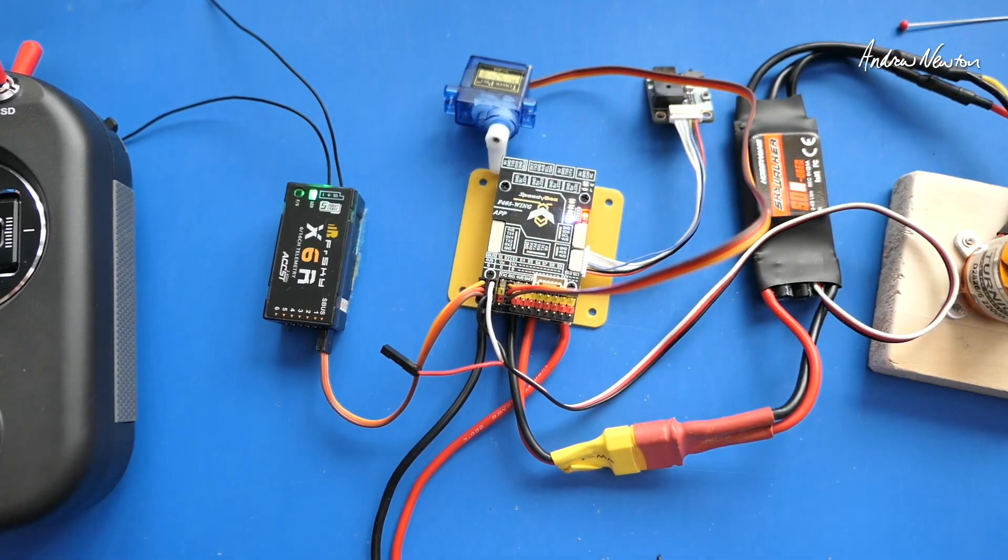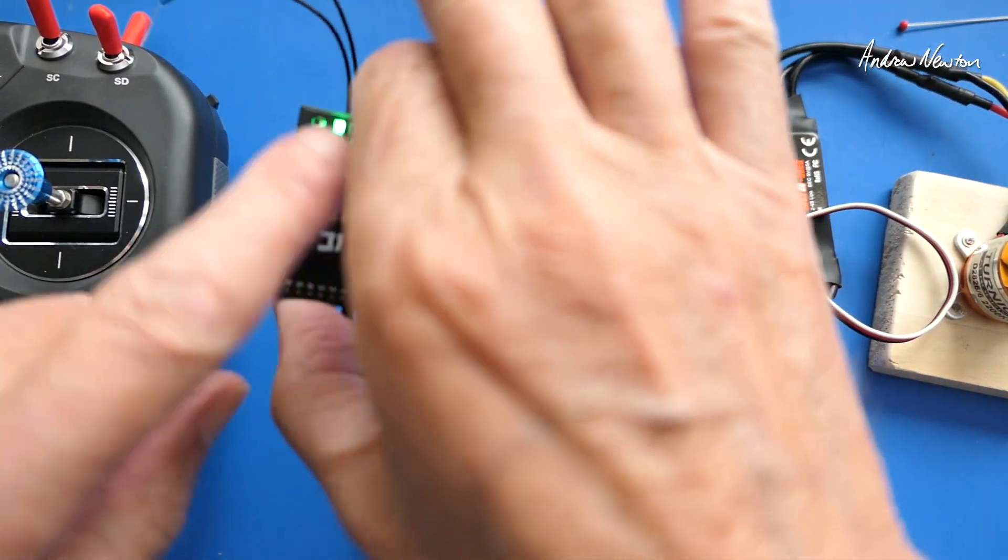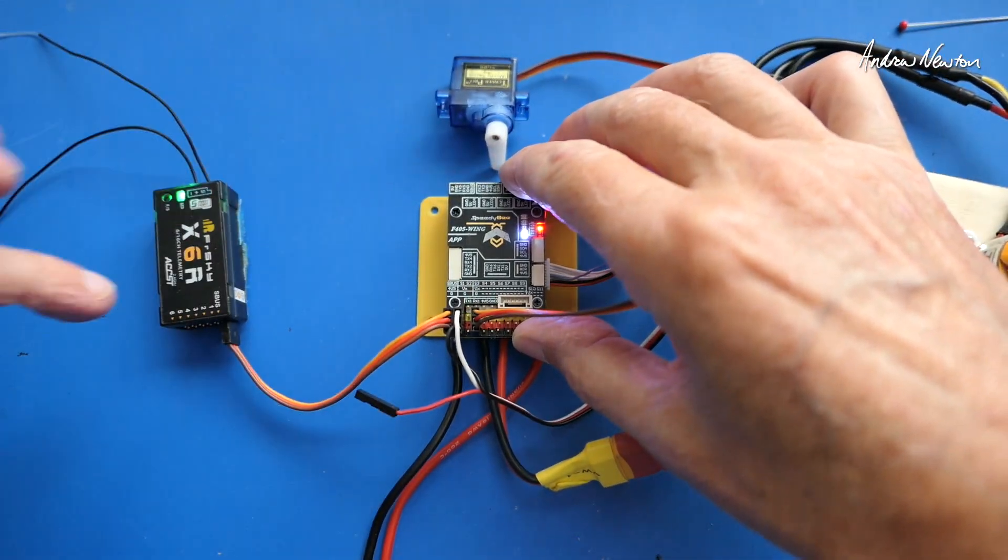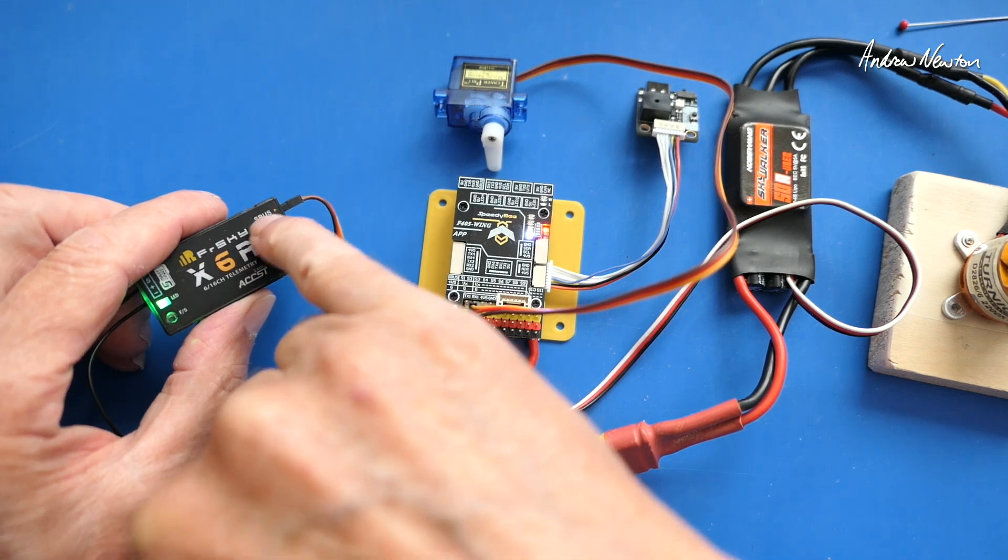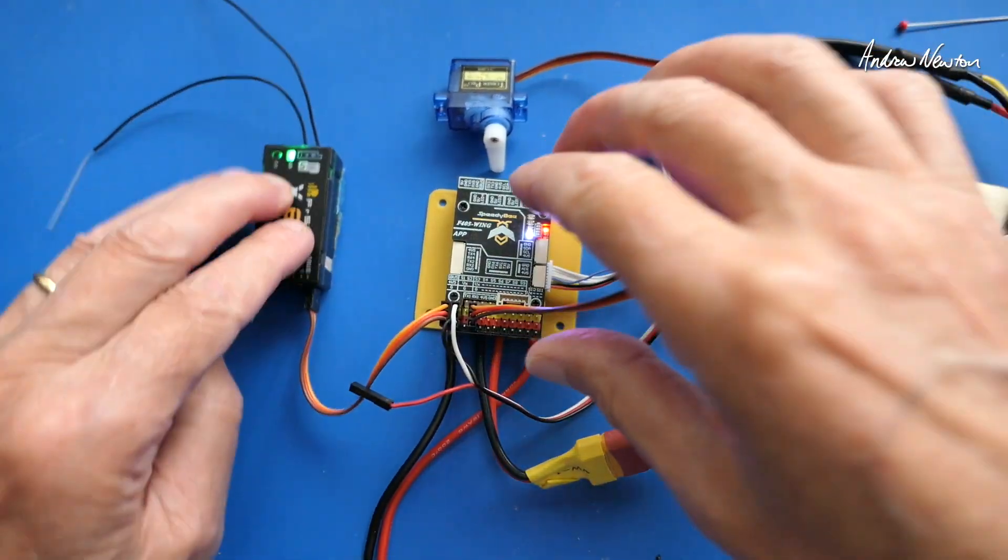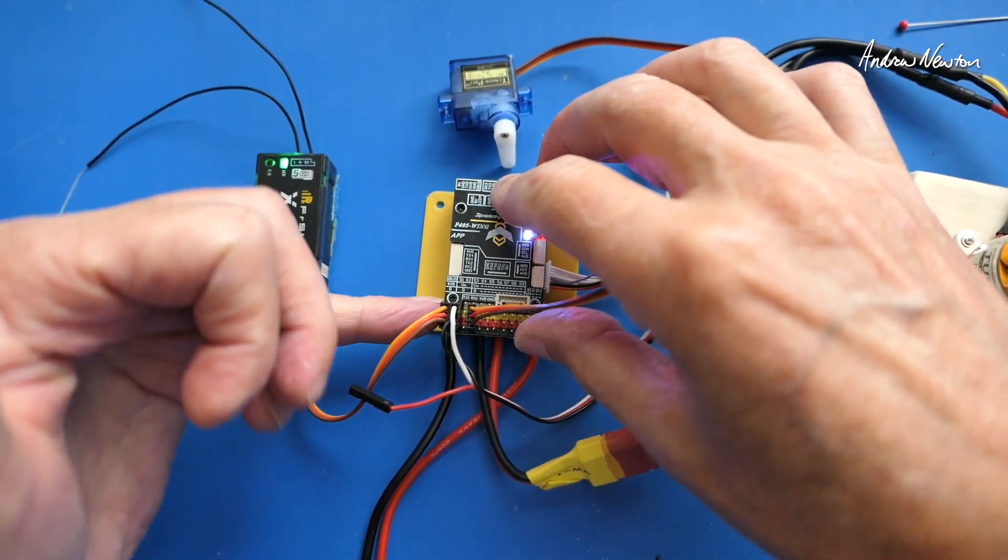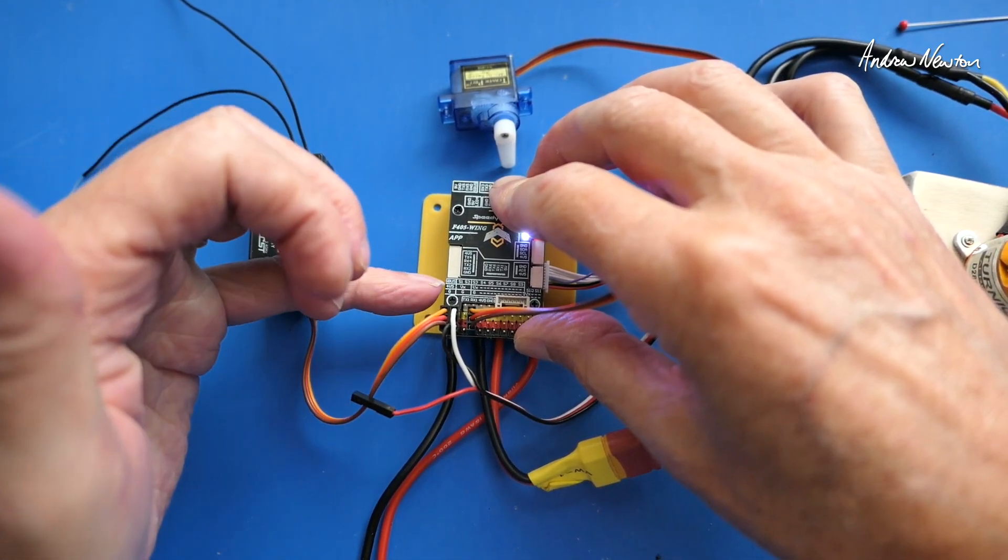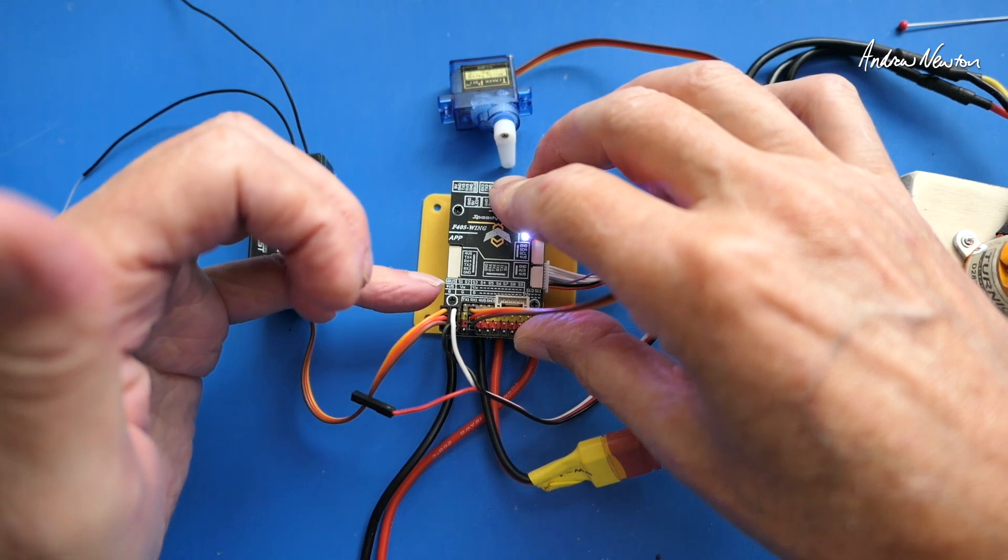So once again I'll show the overview. We have the radio which is talking to the receiver. The receiver is plugged in. This is an SBUS receiver now. We're using the SBUS connection, plugging into the SBUS pins on the flight control board, which are the first few pins there. That incidentally is on UART2.